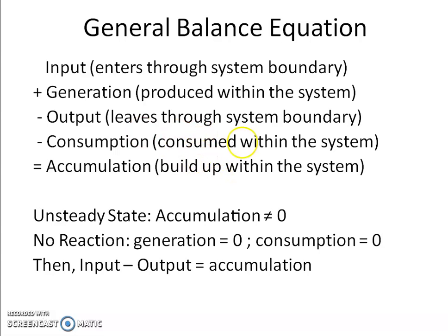The accumulation term, when taking a total mass balance, takes the form dm/dt — the rate of change of mass within the system. For unsteady state, the accumulation term is not zero. But generation and consumption terms are zero because we are assuming no chemical reaction. So the general balance equation for continuous unsteady state problems becomes: input minus output equals accumulation.